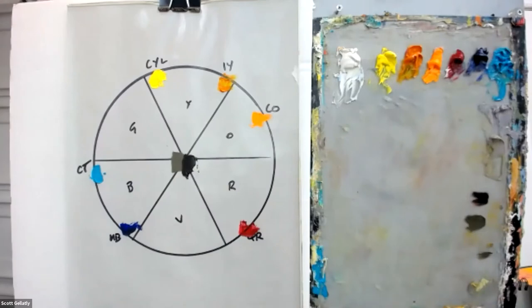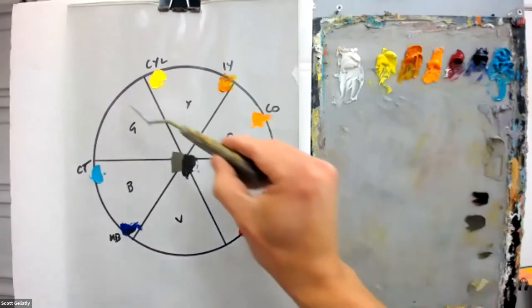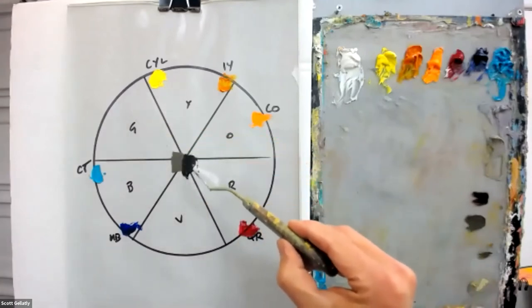Another way to describe this is complementary colors can't live any farther away from each other around the color wheel. And so they pass right through that neutral center.